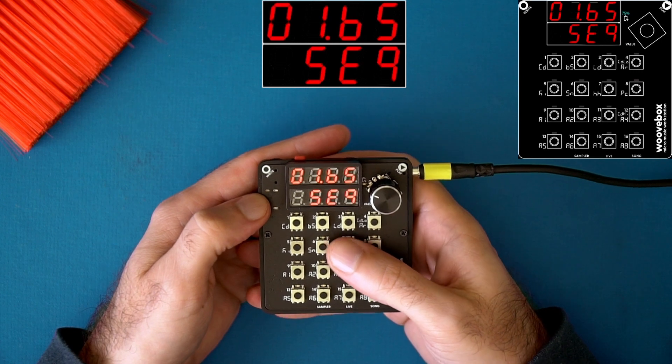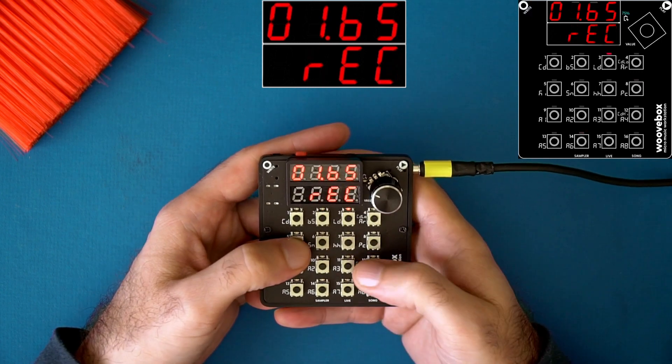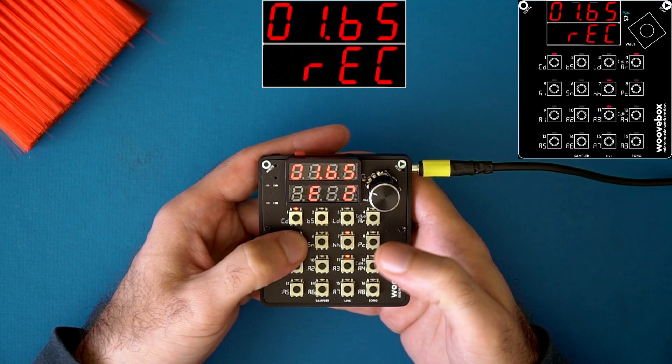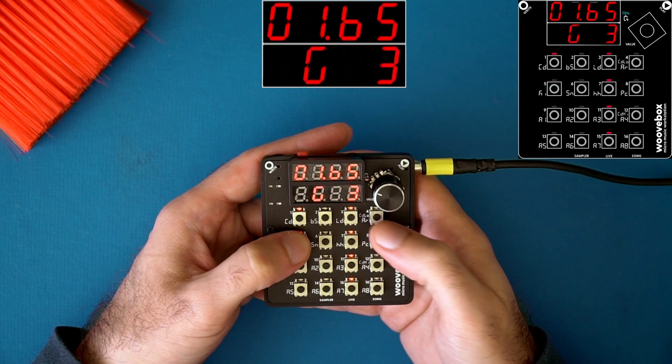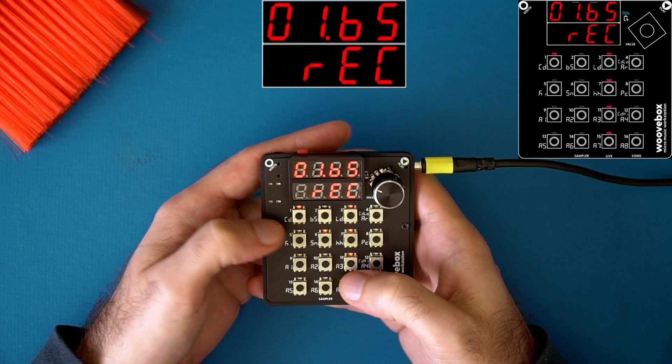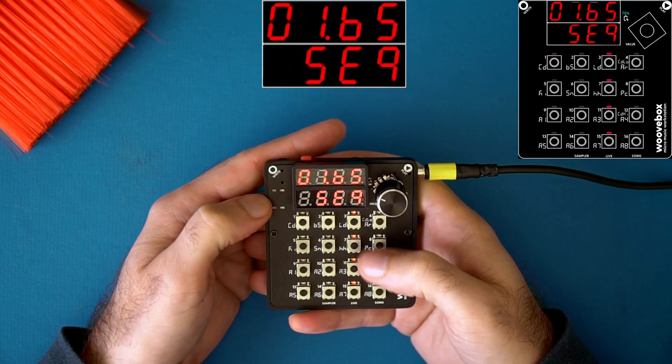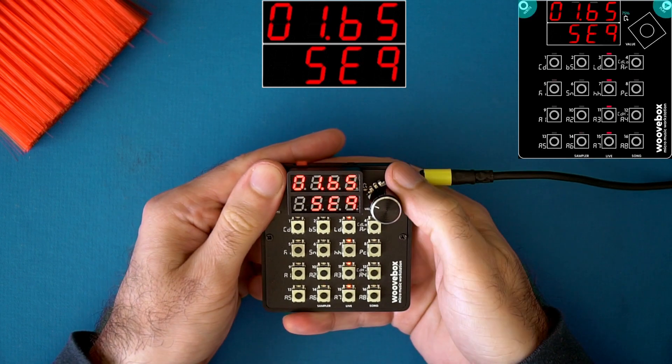Tip number five is how to live record. You hold right and press play. It'll say rec. It also works while it's playing. So let's say this is playing, you can hold right and press play.